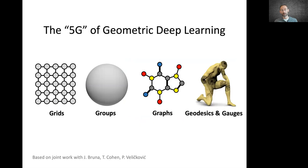This is a very general design. We can apply it to different types of geometric structures, including grids, homogeneous spaces with global transformation groups, graphs, and manifolds. We call this the 5G of geometric deep learning.